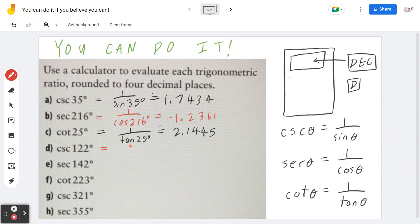Welcome back. So again, if you think about cosecant of 122 degrees, that's 1 divided by sine of 122 in the calculator, which is approximately 1.1792.